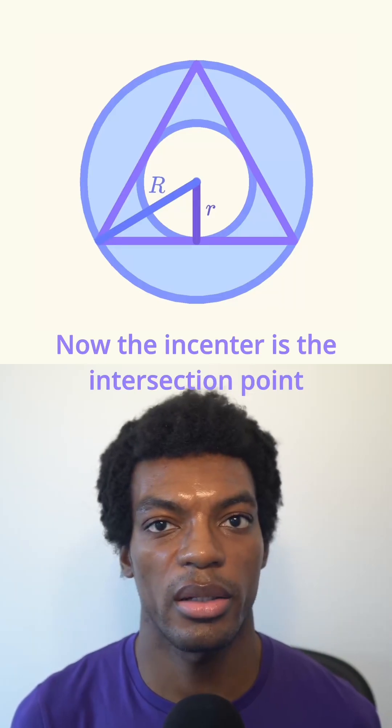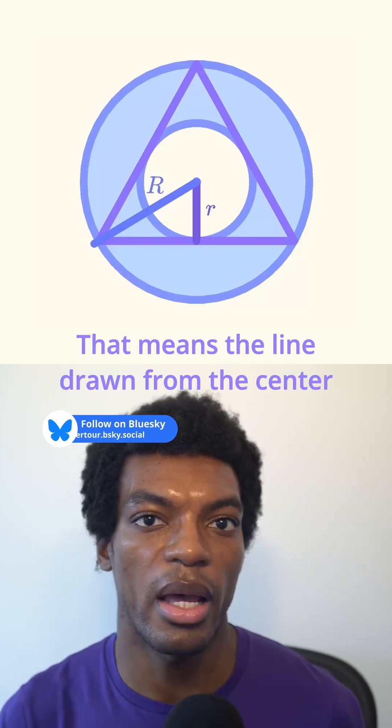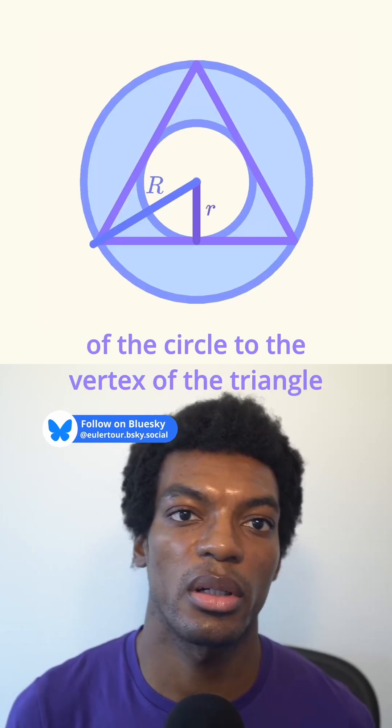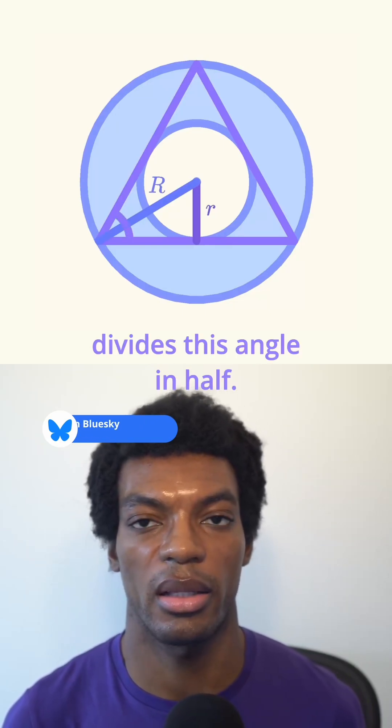Now the incenter is the intersection point of all three angle bisectors. That means the line drawn from the center of the circle to the vertex of the triangle divides this angle in half.